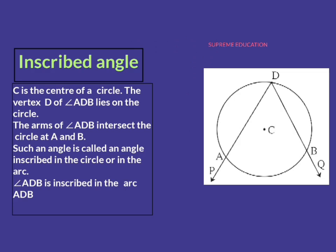Inscribed angle: here is one circle with center C and an angle is shown — that is angle ADB, or angle PDQ — shown in this figure. The vertex of angle ADB, that is point D, lies on this circle. This is a required condition to be an inscribed angle: the vertex of that angle should be on the circle.